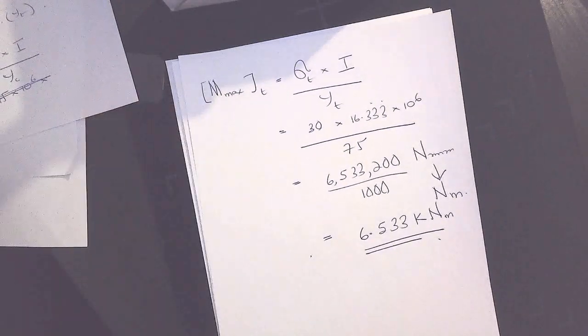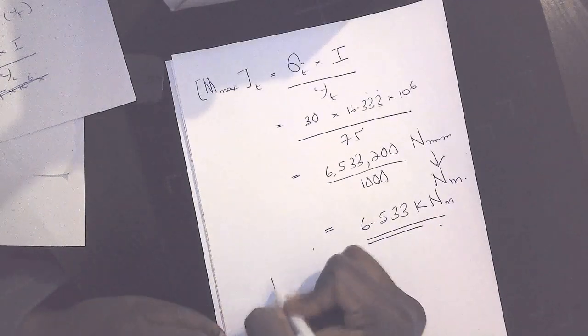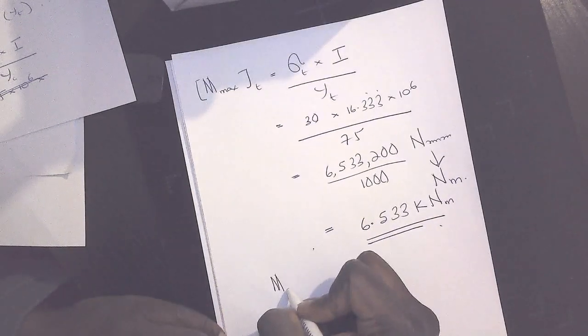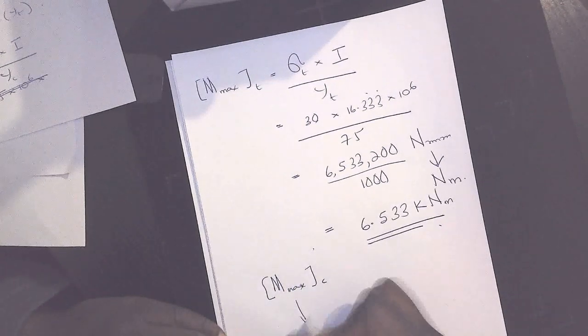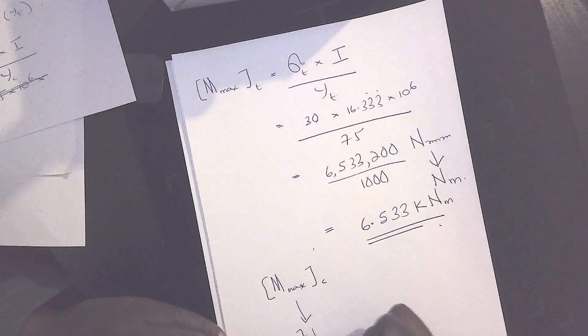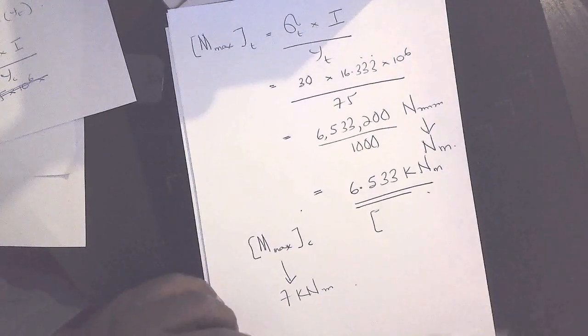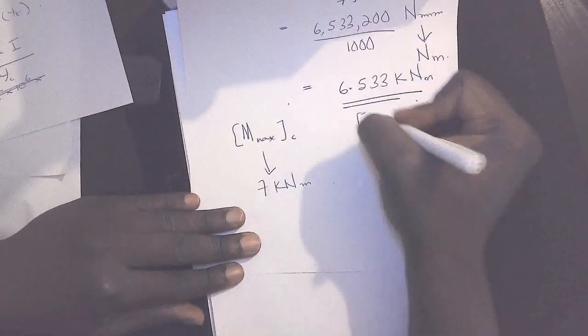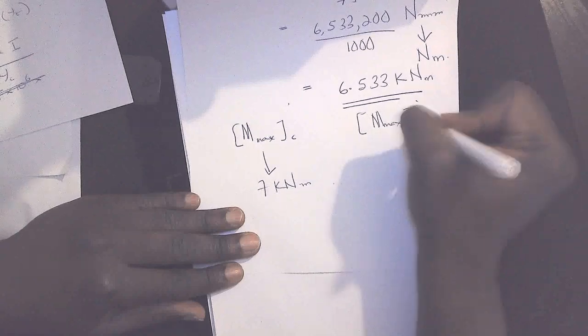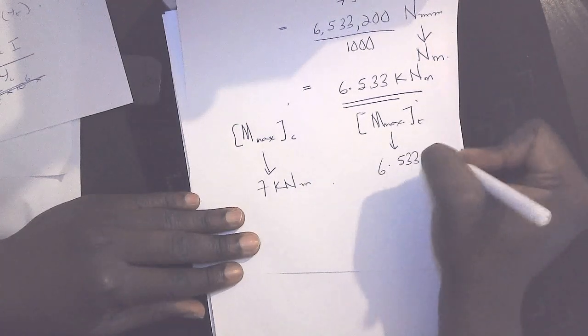So we've got two values of M. So how will the two compare? M max with respect to compression, that's approximately 7 kilonewton meters. M max with respect to tension, let's make it clear what we're doing, that's 6.533 kilonewton meters.